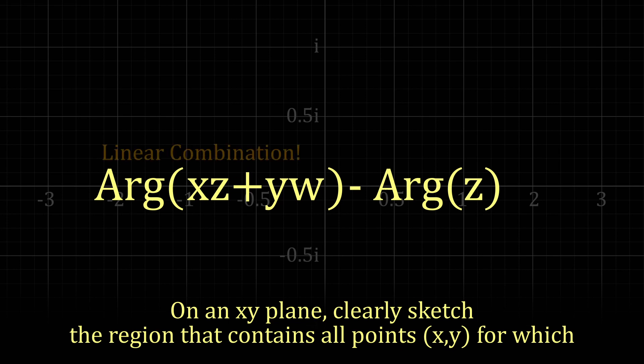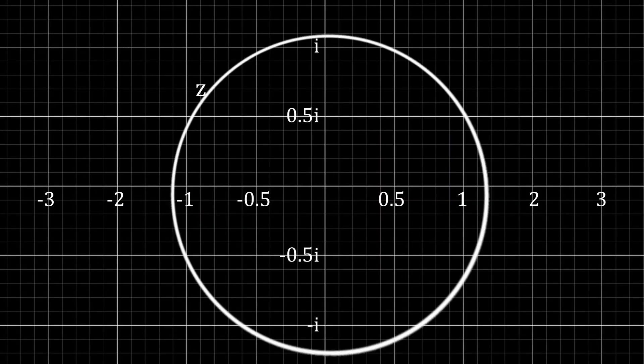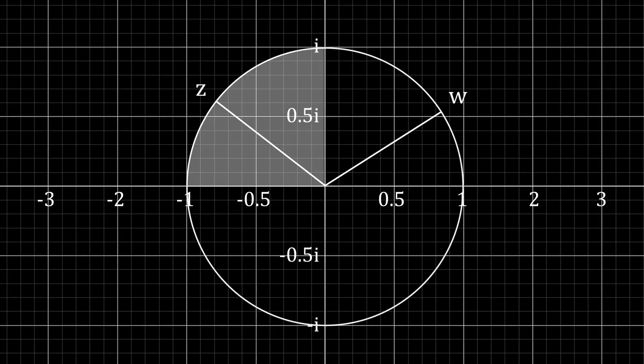This over here is a solid linear combination, while this means we rotate by z's angle clockwise. To have this argument be in between pi divided by 2 and pi, we need xz plus yw to be in this section, rotated z's angle clockwise.